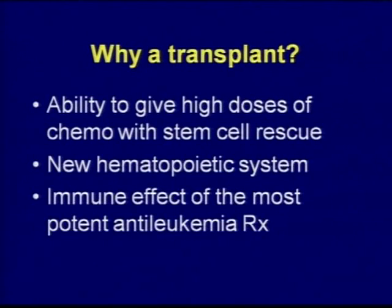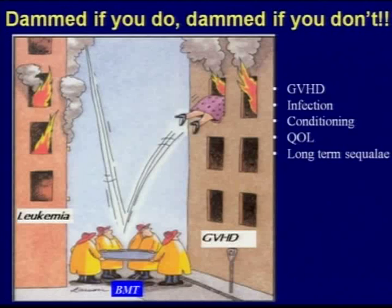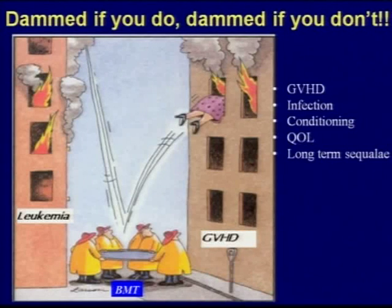So why a transplant? Obviously, the reason for a transplant in ALL, as it holds good for many other hematological malignancies, is the immune effect — the most potent anti-leukemia treatment available. But then, to borrow a phrase from Lorenzo Dew: damned if you do, damned if you don't. Because of transplant, you have GVHD, infection, conditioning, quality of life issues, long-term sequelae, not to mention the donor availability.